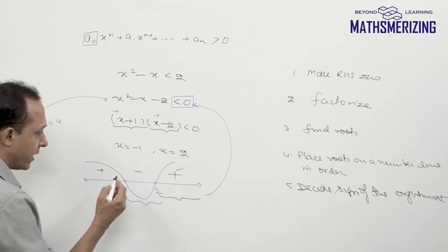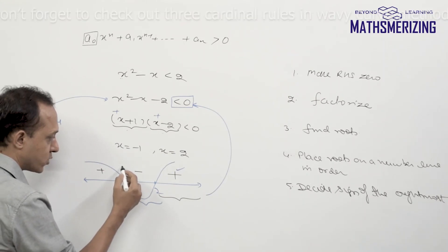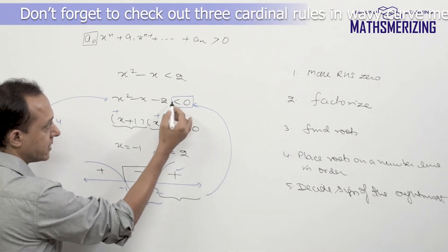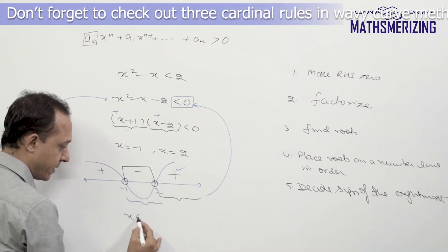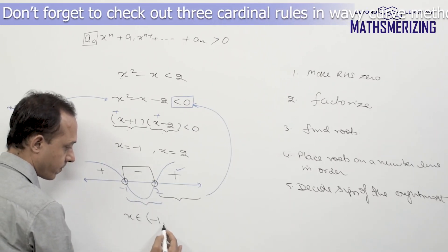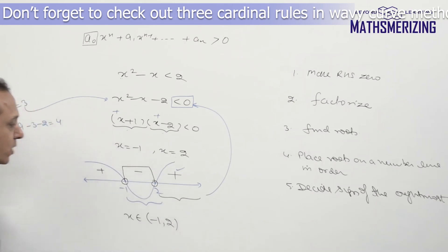So the answer to this inequality will be from -1 to 2 and because it doesn't have an equality sign I'll simply use open circles. So the answer to this question will be x belongs to (-1, 2) and both not included.